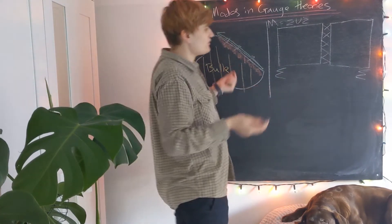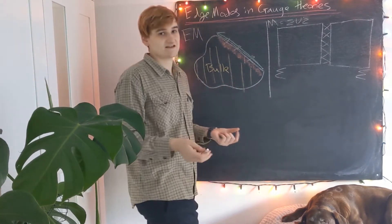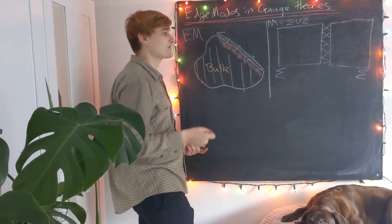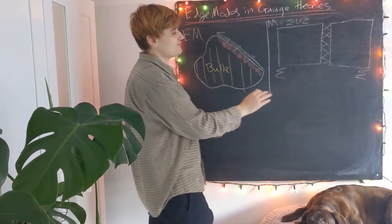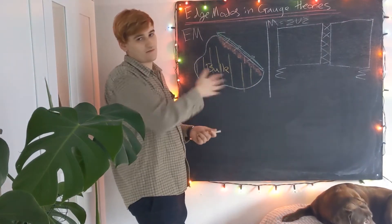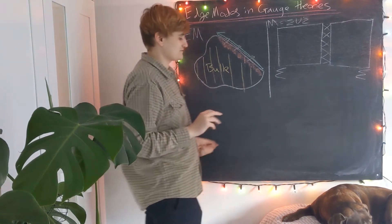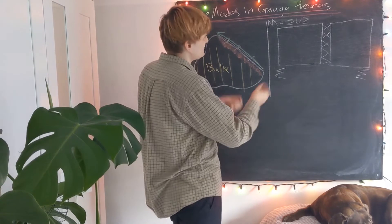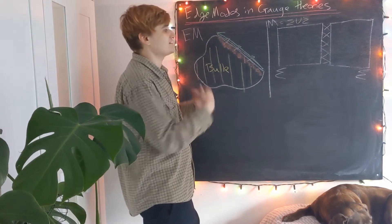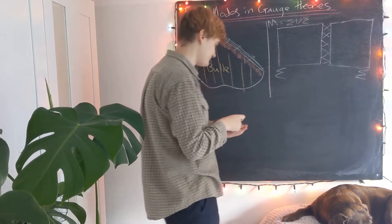We should remember that we always need things to be gauge invariant. Without getting into the details, introducing a boundary like this is going to break gauge invariance in most cases. Even if introducing a boundary doesn't break overall gauge invariance, you can break other things — such as the pre-symplectic form not being gauge invariant — but those are details we don't need. We can content ourselves with the motivation that introducing a boundary is going to break gauge invariance, so we need some way to restore it even when we have a boundary.